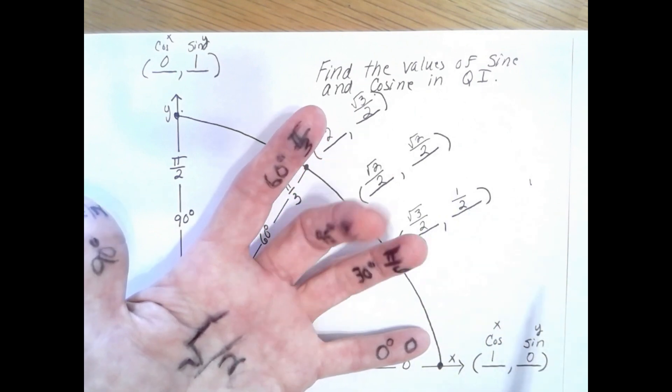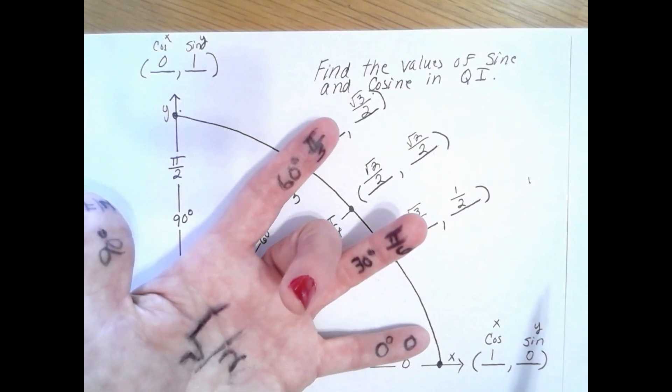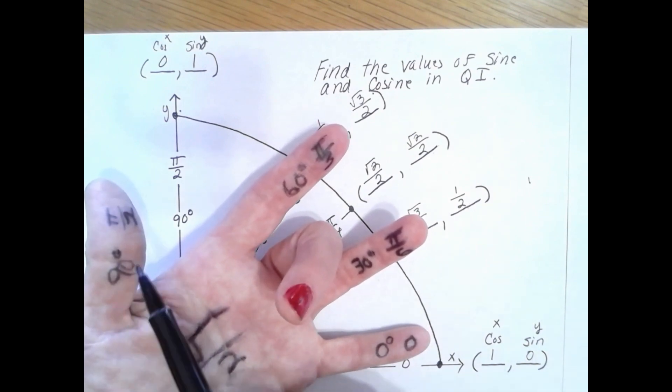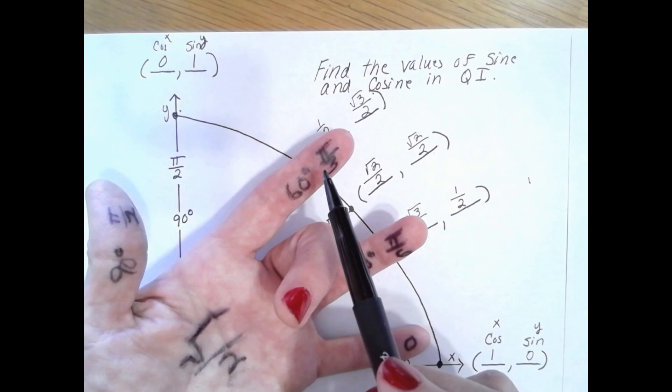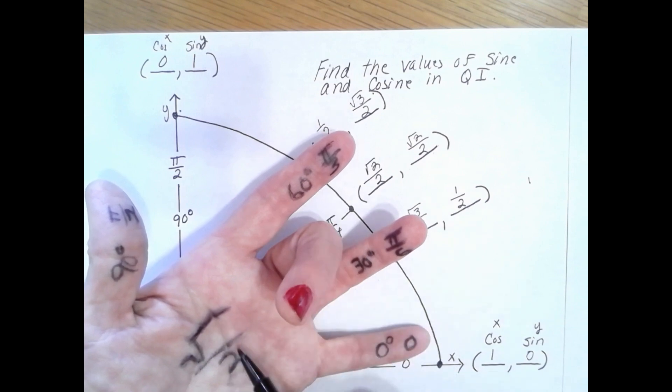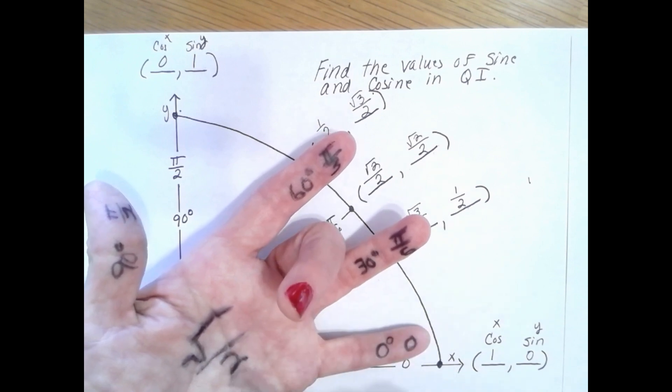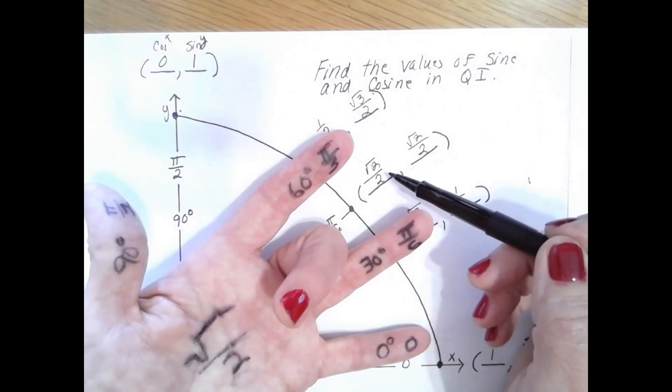Now let's look at 45 degrees. I pull in that finger and I can see that on the left side I have 1, 2. So the square root of 2 over 2 is cosine at 45 degrees.